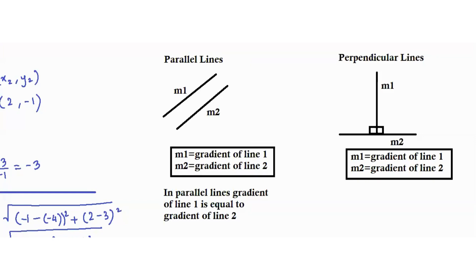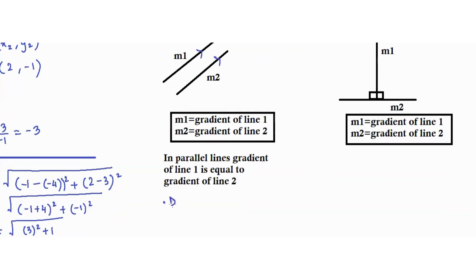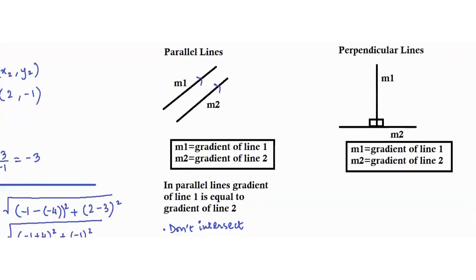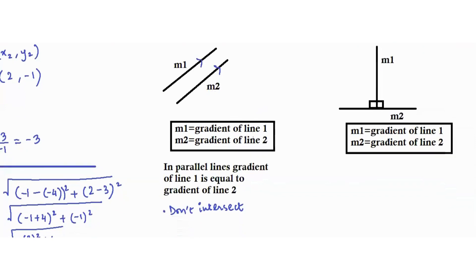Next we have parallel lines and perpendicular lines. Parallel lines are lines which never meet — they don't intersect. Since they're not intersecting, their gradients are equal. Whatever the gradient of line 1 is — the value of m1 — it will be the same as m2, the gradient of line 2.